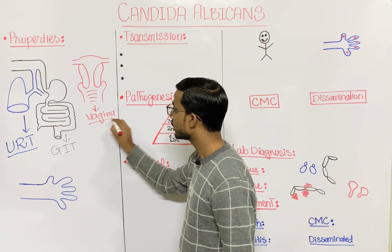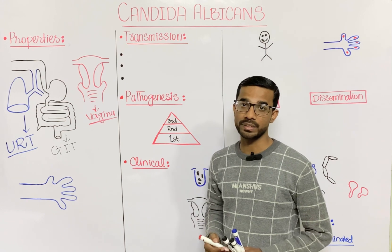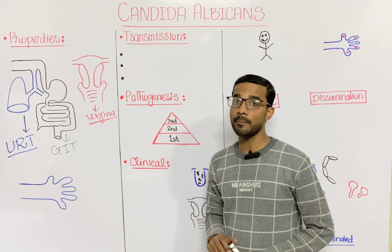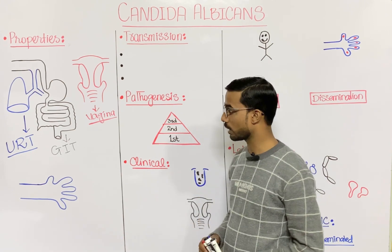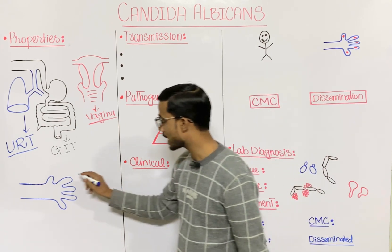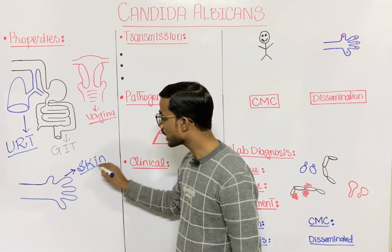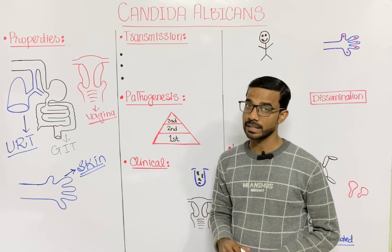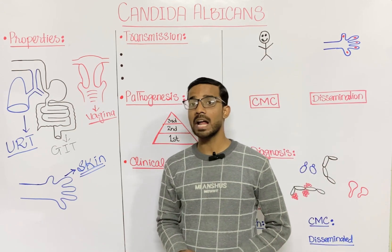The vagina is also lined by mucous membrane and is a resident site of Candida albicans. So these are the three most important mucous membrane sites occupied by Candida albicans, and Candida albicans can also be found on the skin as well.